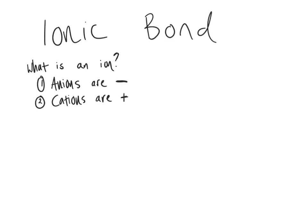I remember cations because cats have paws, and positive kind of rhymes — so cations are positive. What makes an ion an ion is the amount of electrons that atom has. Normally, if an element has an equal number of protons and electrons, those charges neutralize and you have a neutral atom. An anion has more electrons than protons, giving it an overall negative charge, while a cation has fewer electrons than protons.